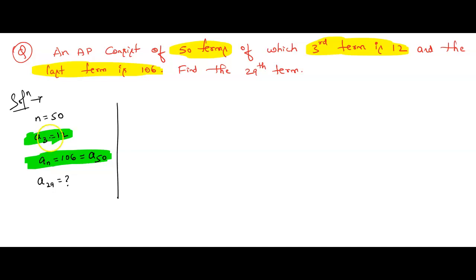Now, if 2 nth terms are given in the same problem, then we use the formula that is D equals AP minus AQ divided by P minus Q. So here AP is nothing but A₃, AQ is nothing but A₅₀.